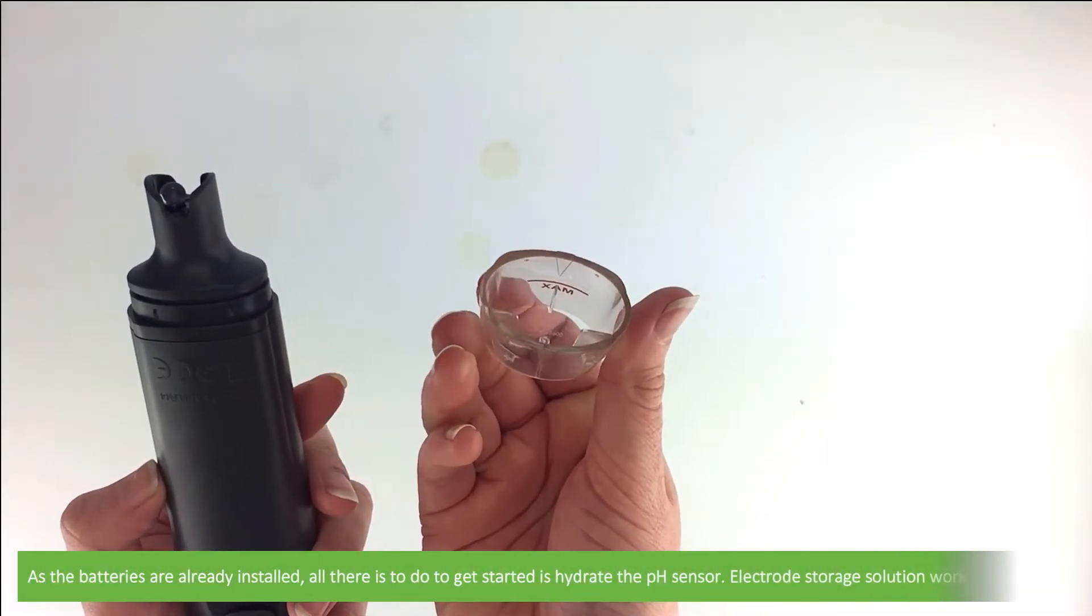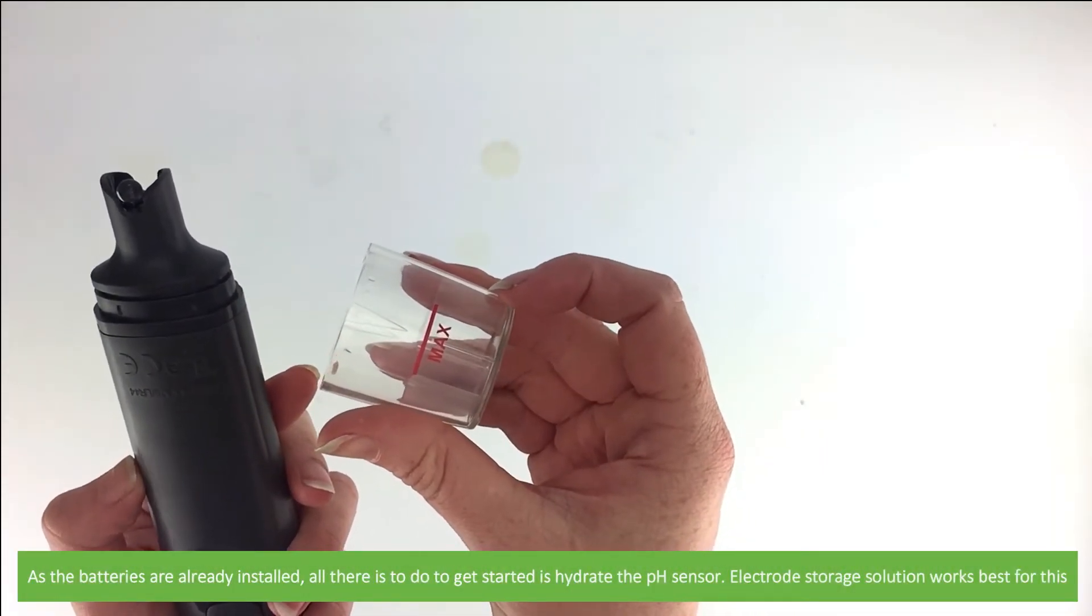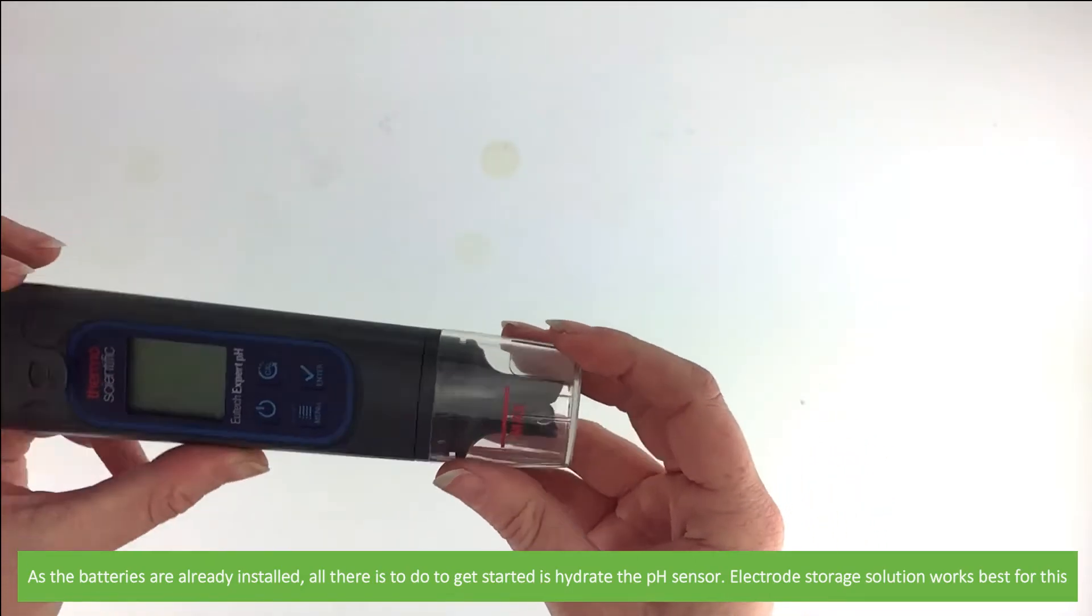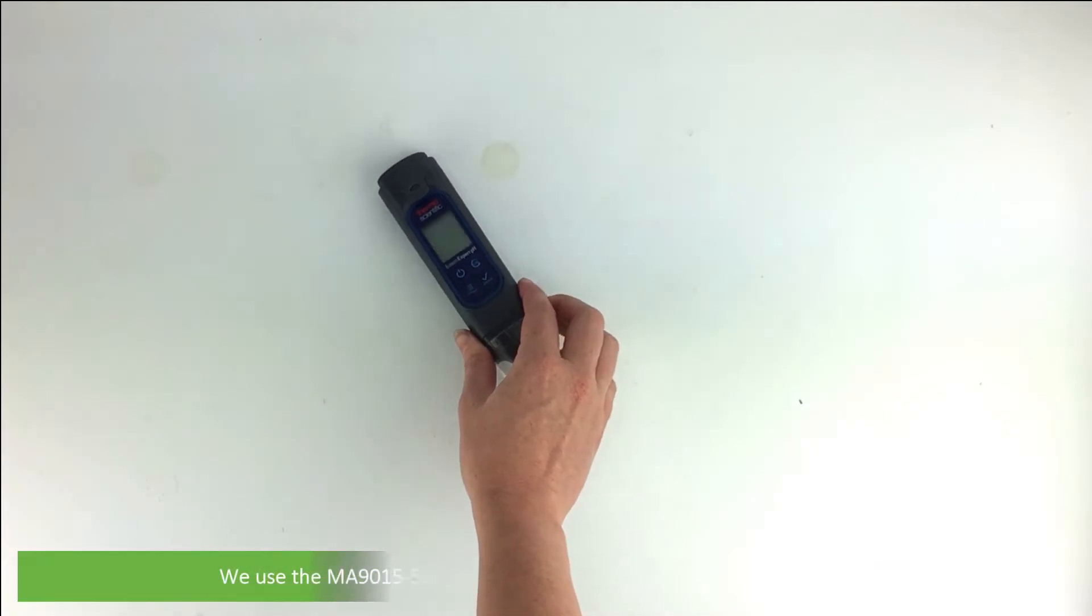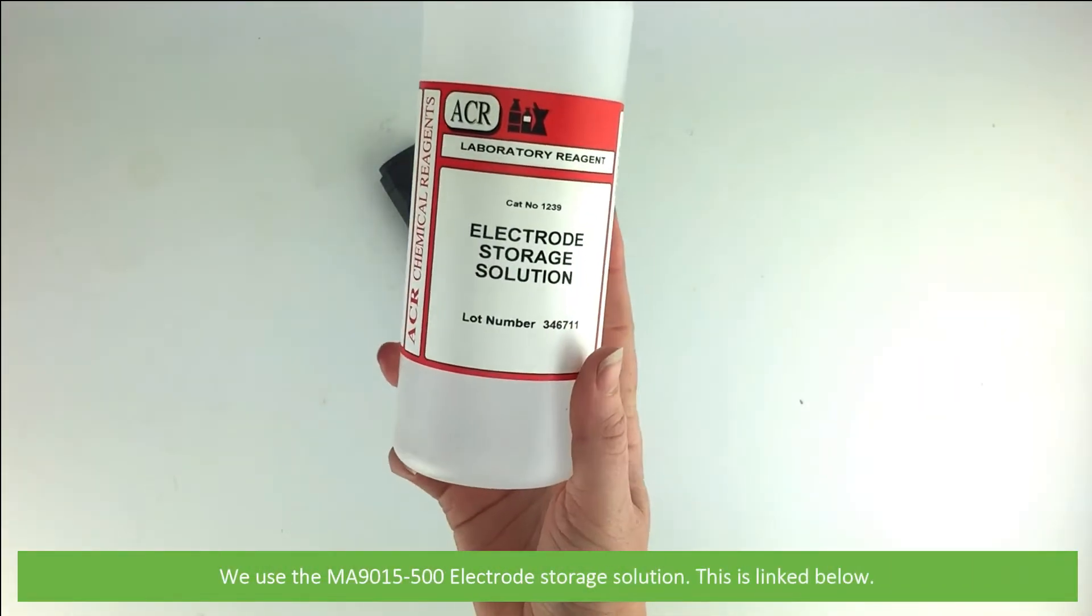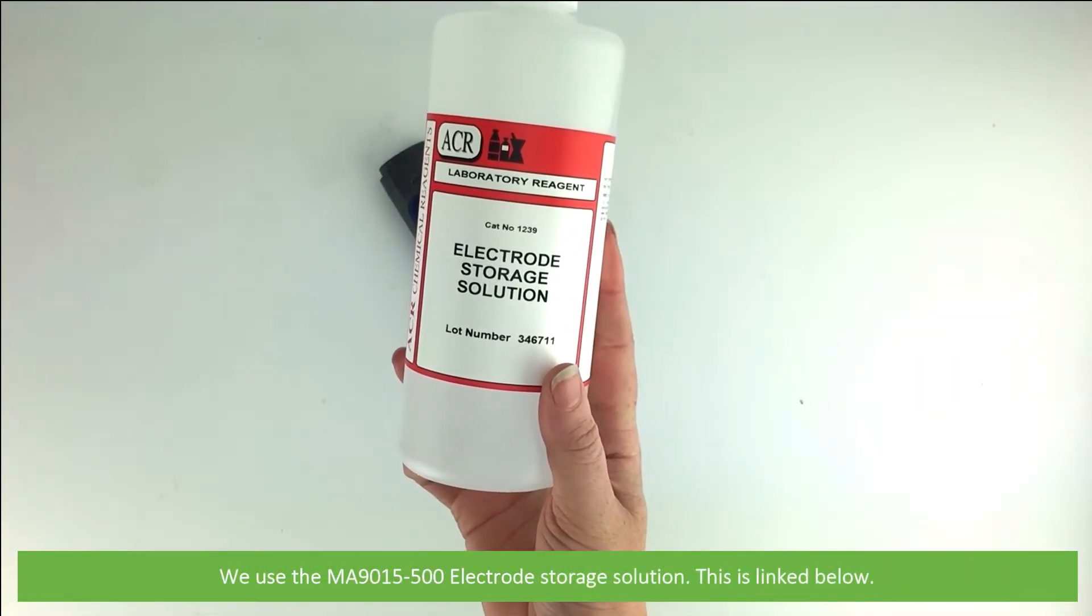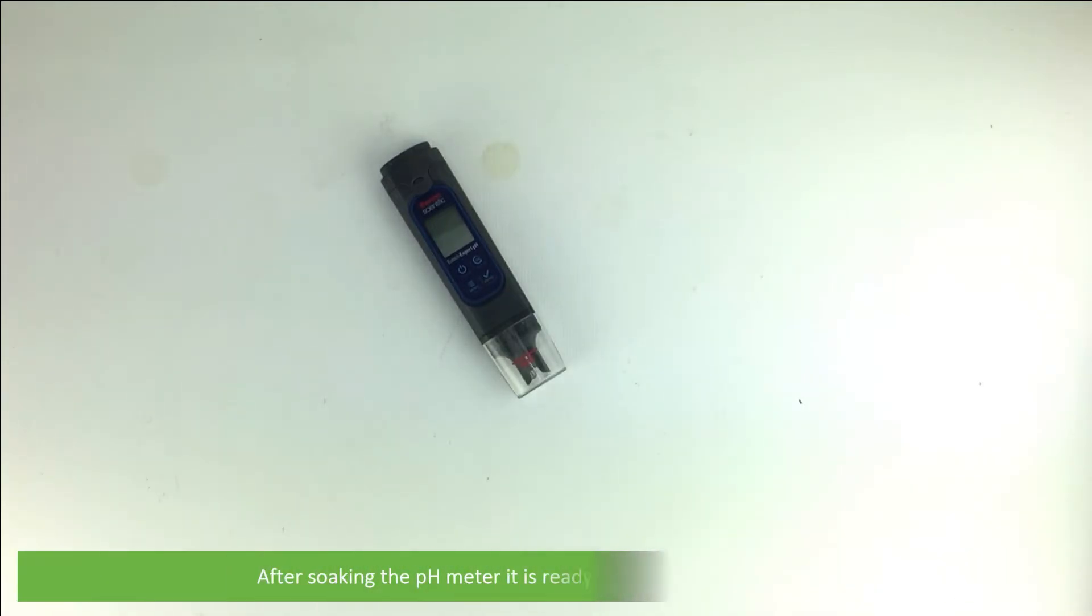As the batteries are already installed, all that's needed to get started is hydrate the pH sensor. Electrode storage solution works best for this. We use the MA9015-500 electrode storage solution. After soaking the pH meter, it is ready to be calibrated and used.